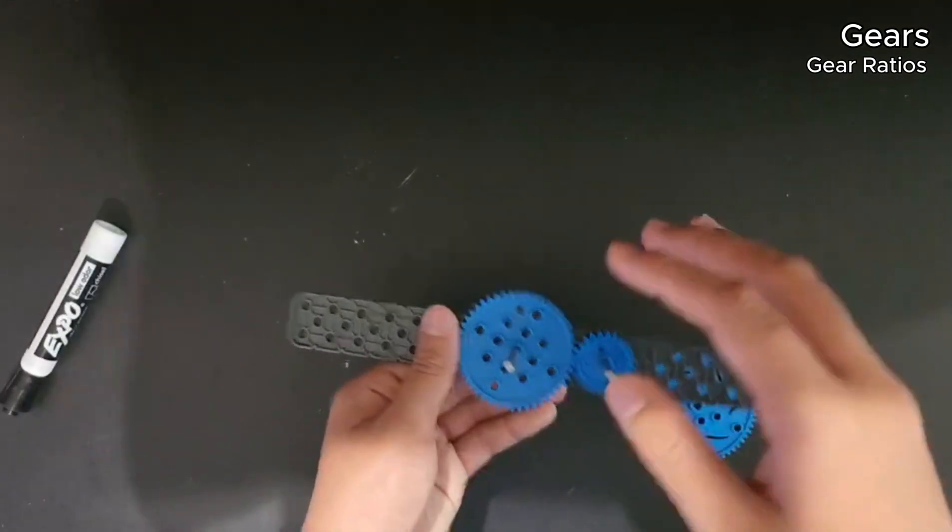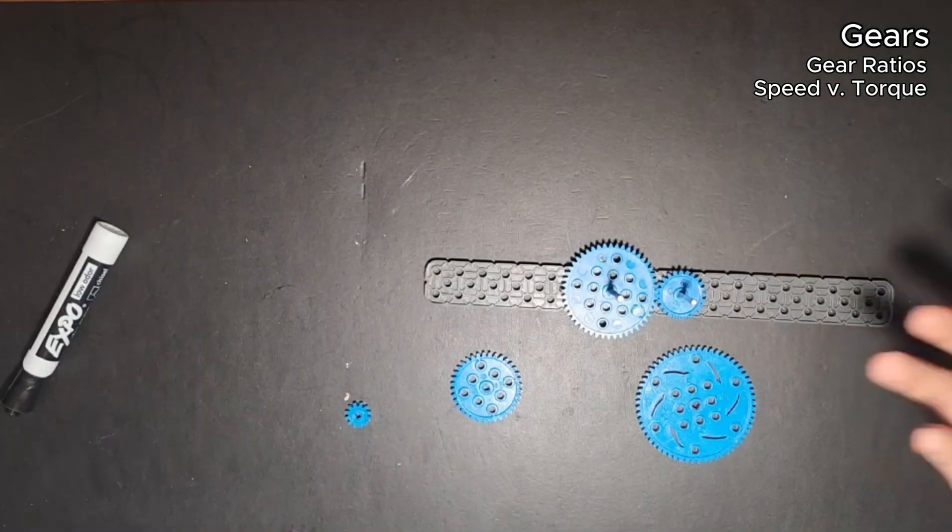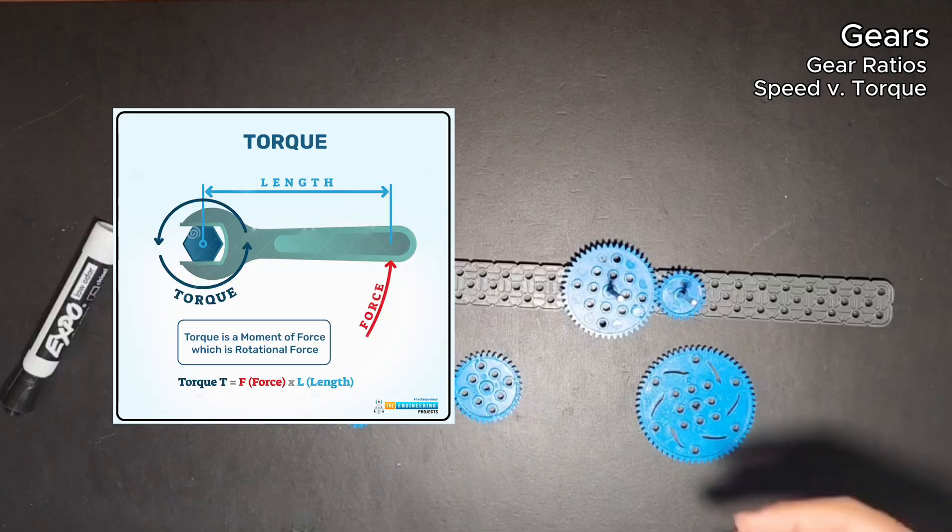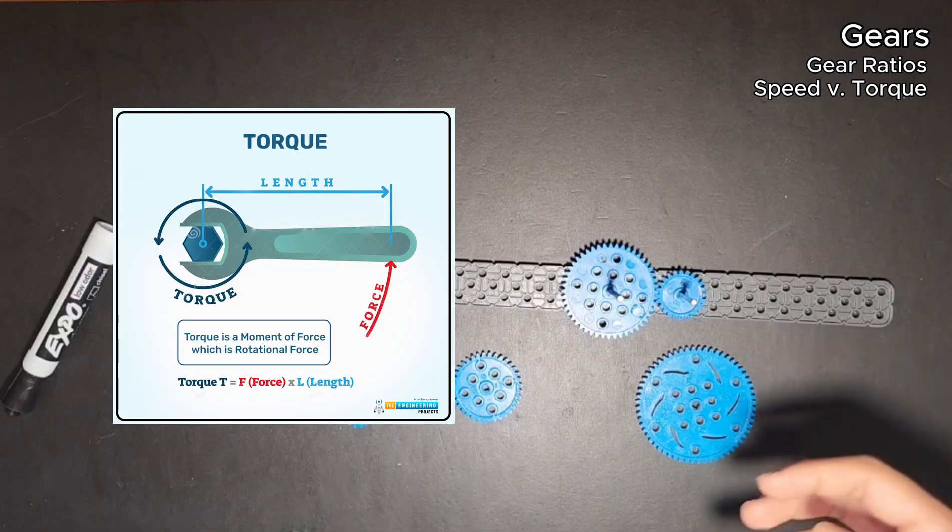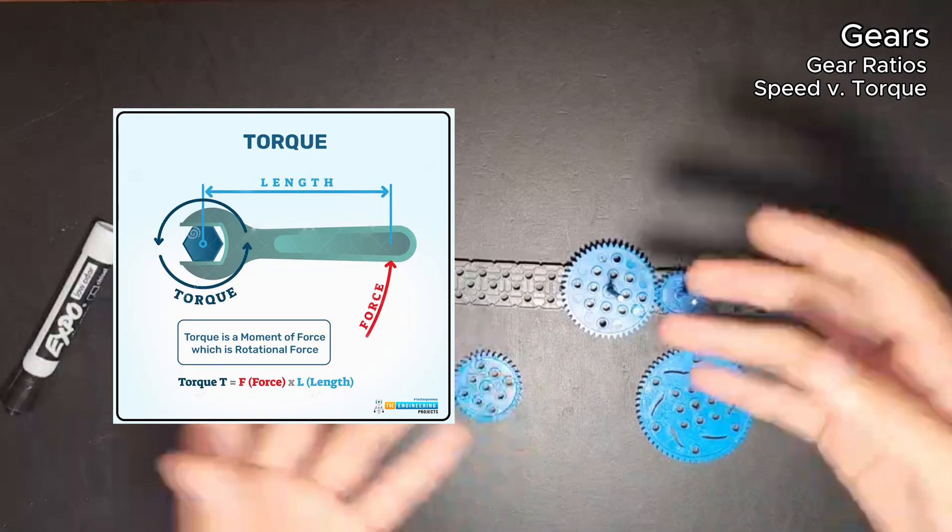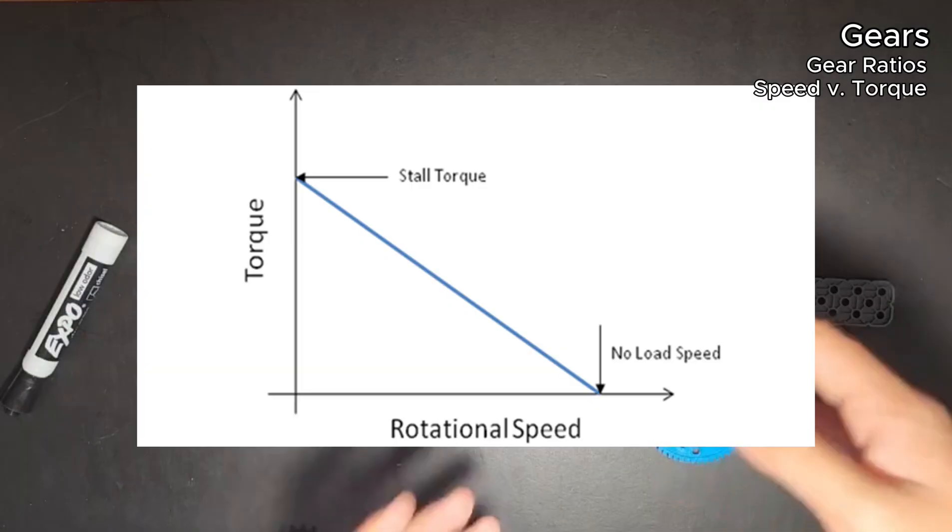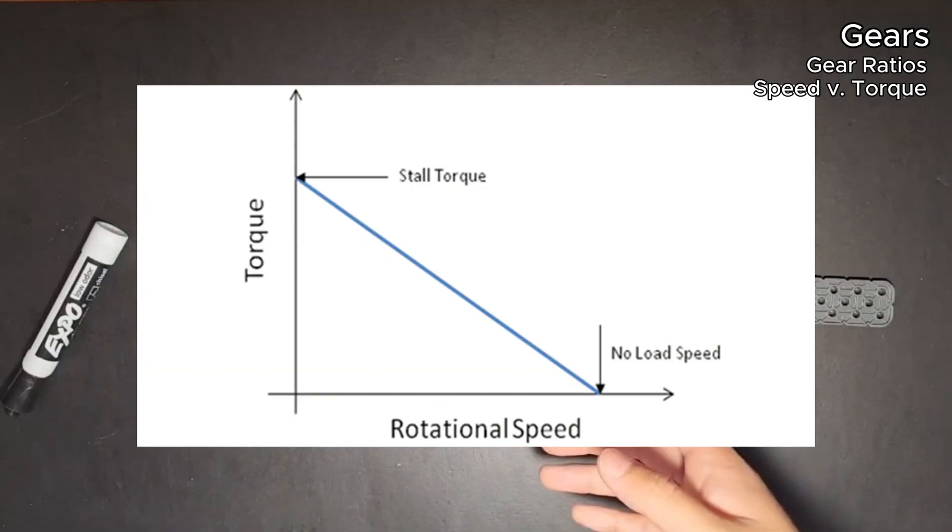So now you're probably wondering, why don't we just have it as fast as possible? Doesn't faster always mean better? Well, speeding something up comes with a drawback, torque. In some terms, torque is a rotational force. It's basically power. The more torque you have, the stronger it is. So as speed increases, torque decreases.